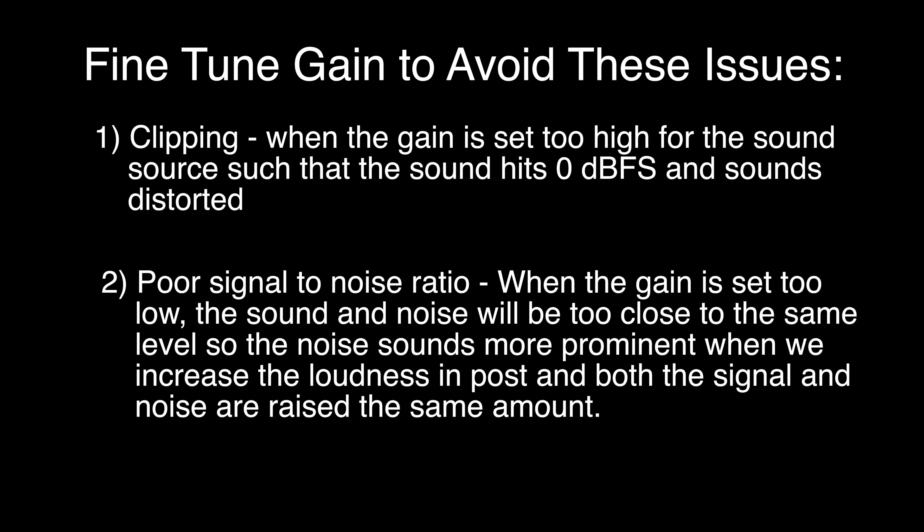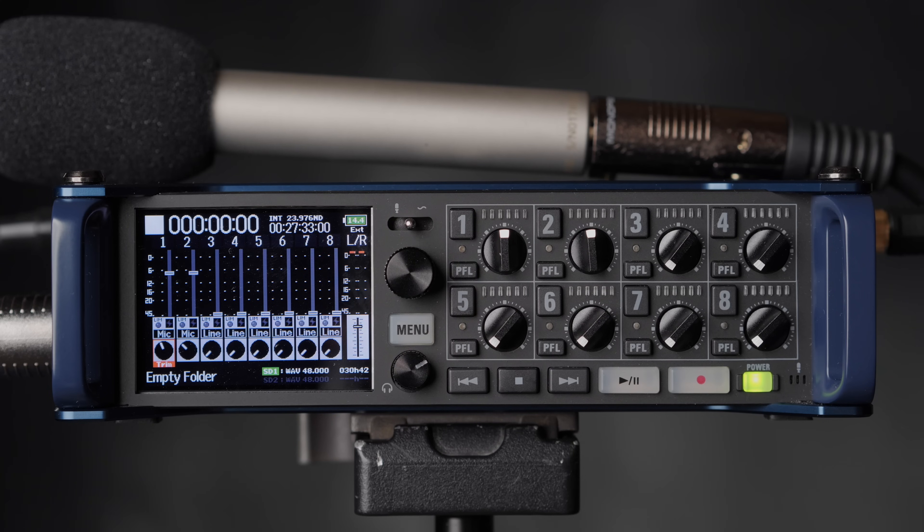We're also trying to optimize our signal-to-noise ratio. That sounds complicated, but it really isn't. Signal is the stuff you're trying to record; noise is the stuff you're not trying to record. If you set the gain too low, the signal and the noise end up at pretty close to the same level. Then in post, when you bring it all up together, it all sounds muddled and noisy — too much of what you don't want, not enough of what you do. So we need to get our gain high enough to optimize that signal-to-noise ratio.